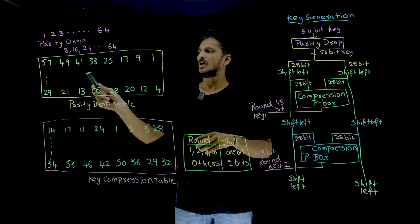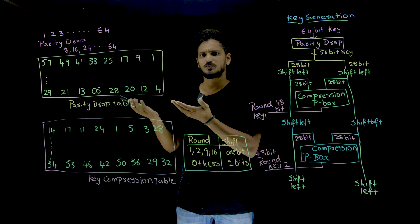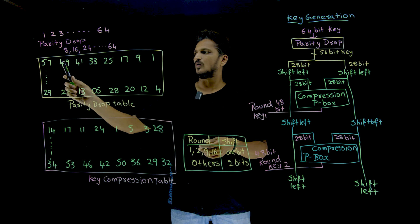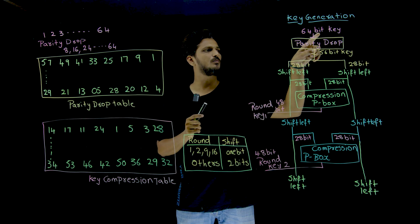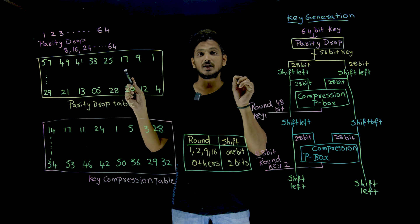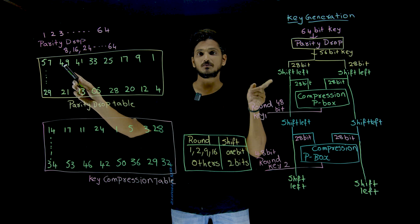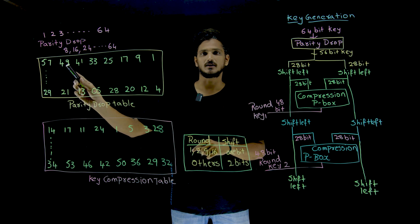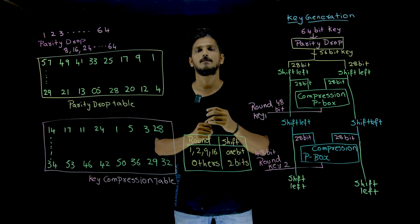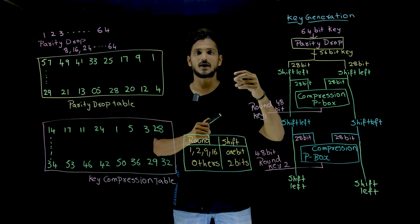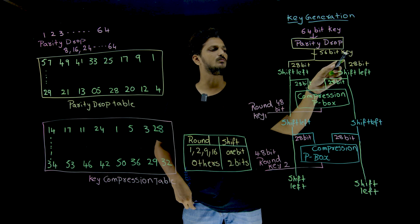We did not mention the complete table here. As you already understand from our previous classes, what p-box means — the table value 57 means: from the 64-bit key, the 57th bit is taken as the first bit here, and the 49th bit is taken as the second bit here. That is how it permutes the bits in the 64-bit key. By eliminating the parity bits, it gives you a 56-bit key.